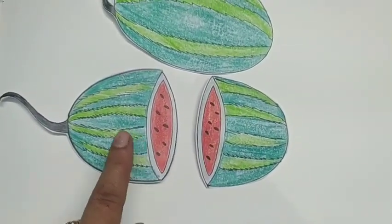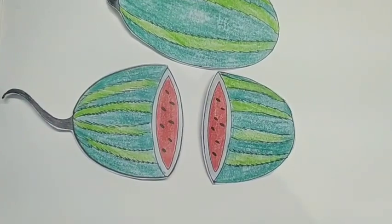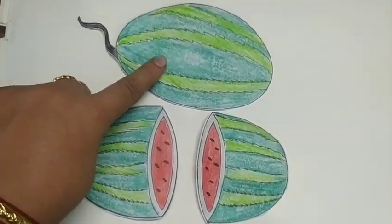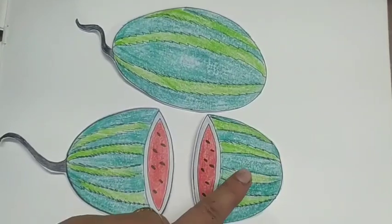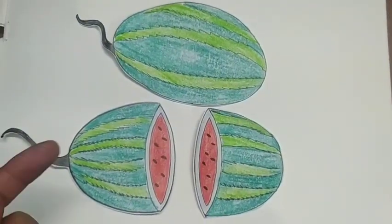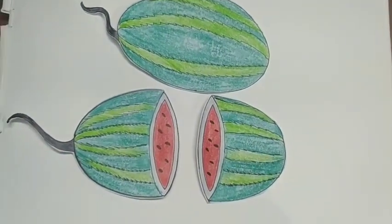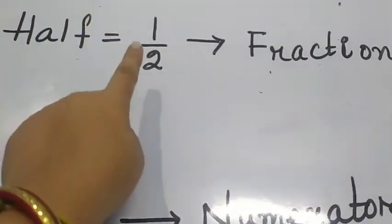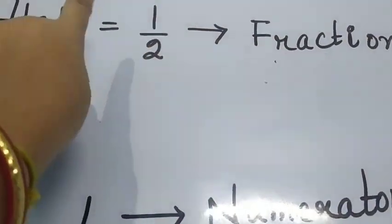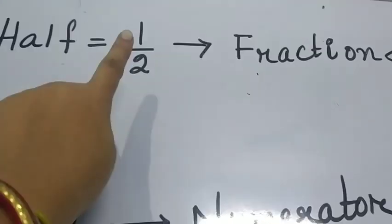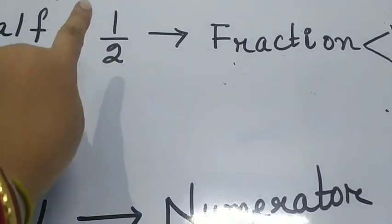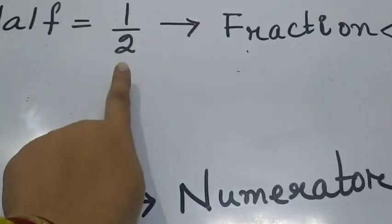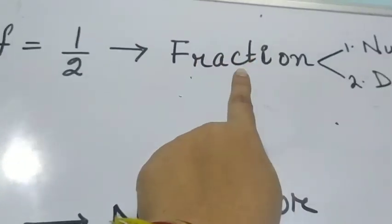So, what does half mean? This is a whole and these two are half. Half means one by two. This one by two is called fraction.